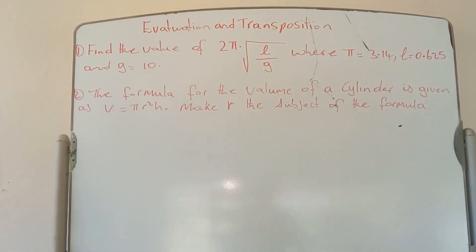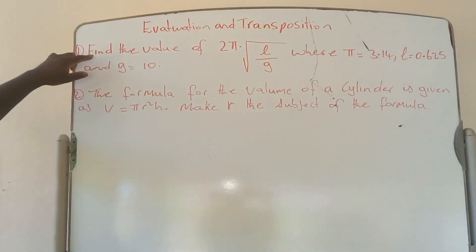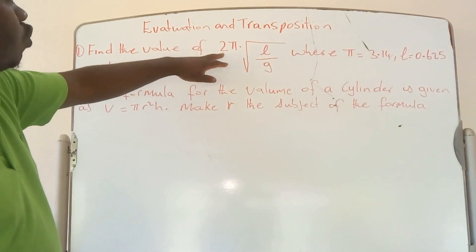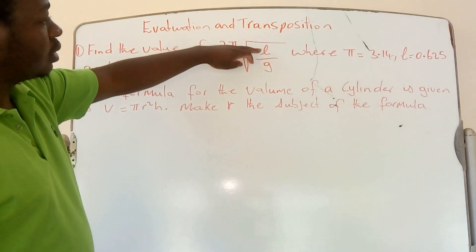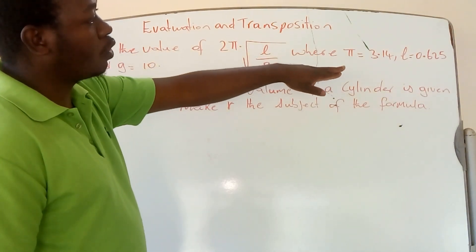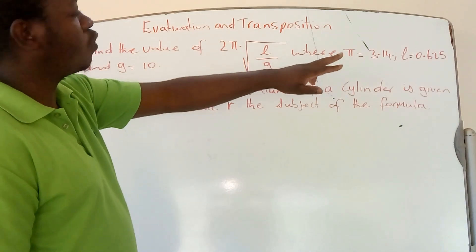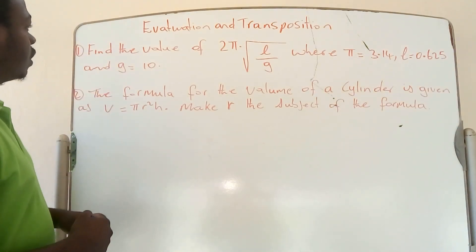In this video, we're going to look at evaluation and changing position, focusing on solving past paper questions. The first question says: find the value of 2π times the square root of l divided by g, where π equals 3.14, l equals 0.625, and g equals 10.